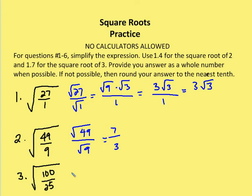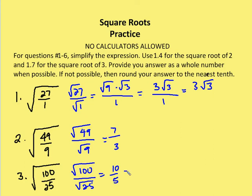Again, I have the square root of 100 over 25. Using the quotient property, that's the same as the square root of 100 over the square root of 25, which equals 10 over 5, and that is equal to 2.